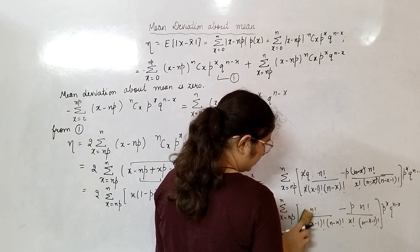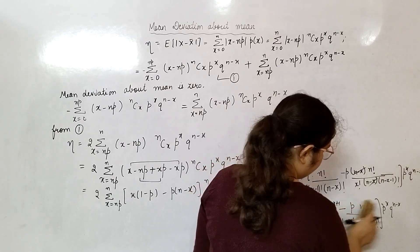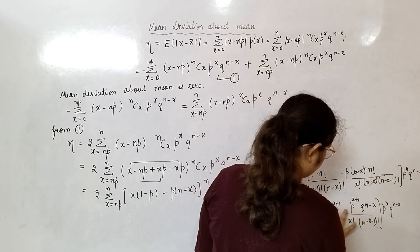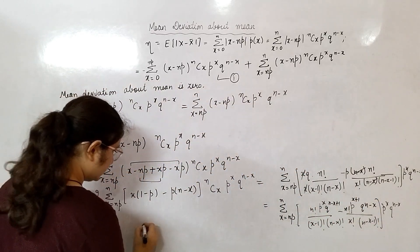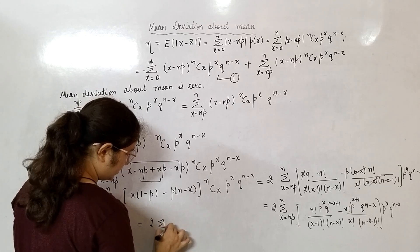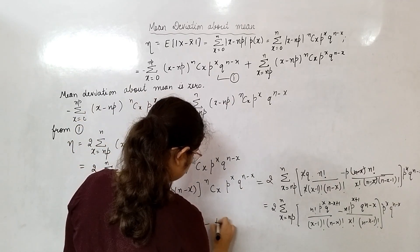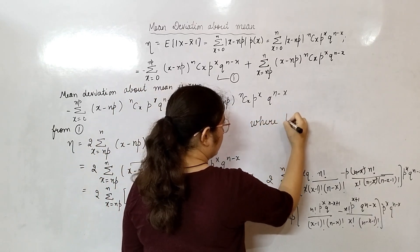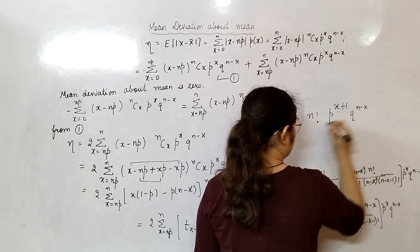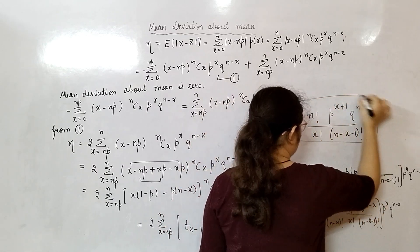Multiplying through, the first term gives p^x · q^(n−x+1) and the second gives p^(x+1) · q^(n−x). I can finally write this as 2 times summation x from np to n of [t_(x−1) minus t_x], where t_x = n! · p^(x+1) · q^(n−x) / (x! · (n−x−1)!).